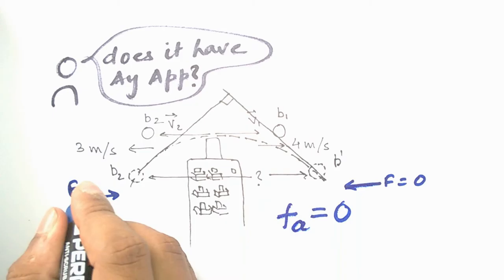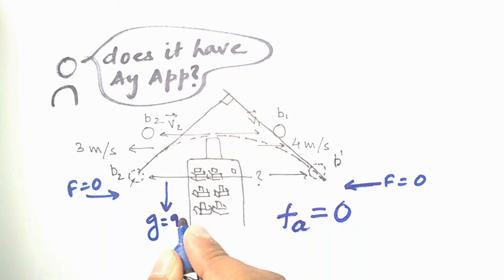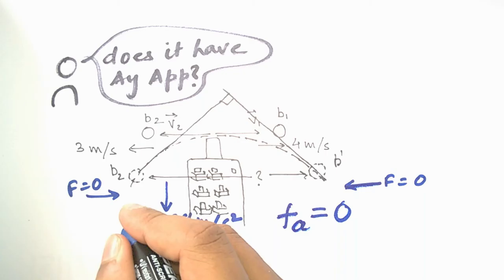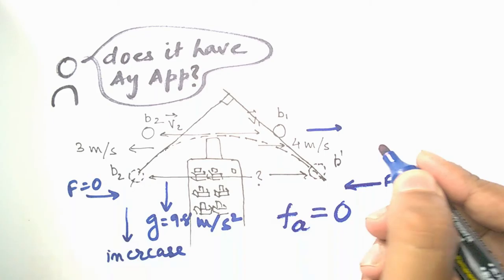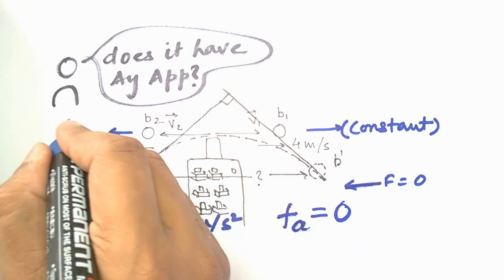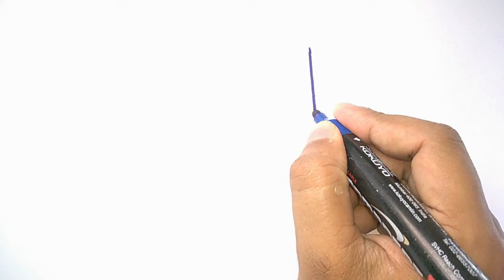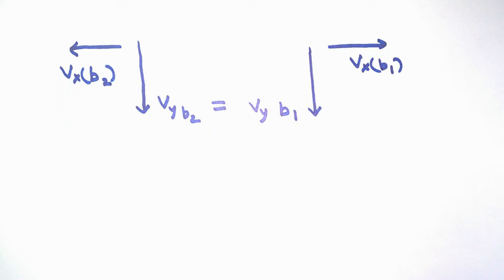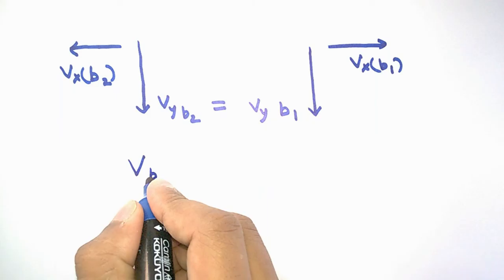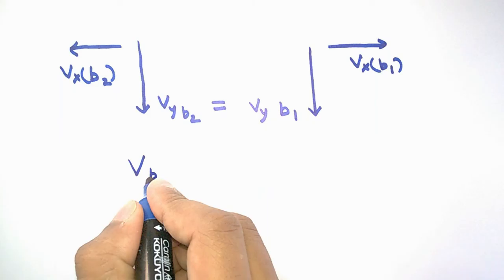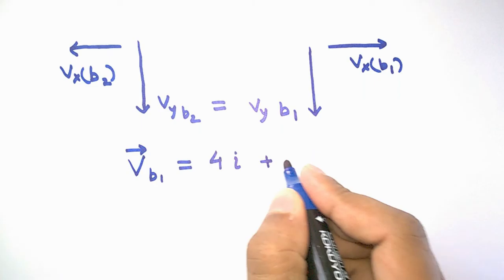To solve this problem, we will first ignore air friction. The velocity of both balls along the horizontal direction will remain constant since there is no force working against their movement horizontally. But in the vertical direction, we have the force of gravity applying the same acceleration on both balls, so their velocity along the vertical direction will increase. Since the acceleration due to gravity is the same on both balls, we will get the same vertical velocity value for each ball at any given time.